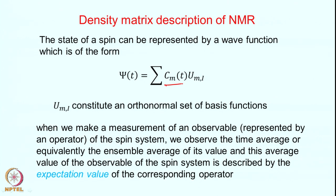Since the wave function is complex in nature — it is a vector with an amplitude and a phase — the coefficients themselves are complex numbers. The various eigenstates U_m constitute an orthonormal set.